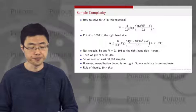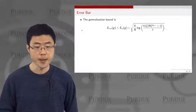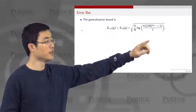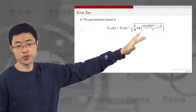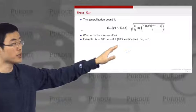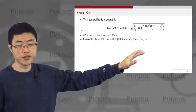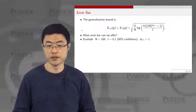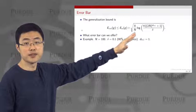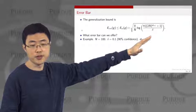I also want to introduce the notion of the error bar. The error bar in the generalization bound is the upper bound term I'm showing in this equation — replacing the growth function by 2 to the power n times d_VC. Suppose you have 100 training samples, a confidence level of delta equals 0.1, and VC dimension equals 1. The error bar tells you how accurate your out-sample error is compared to your in-sample error.